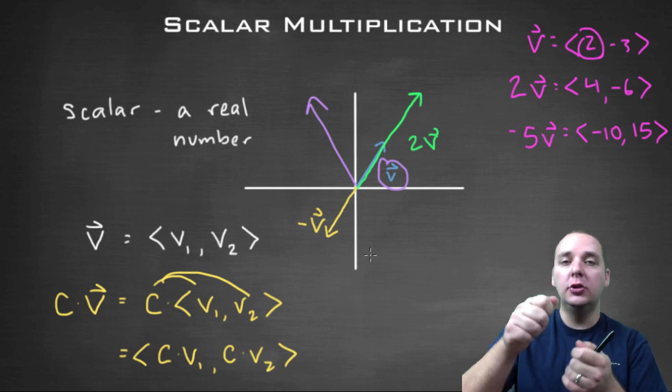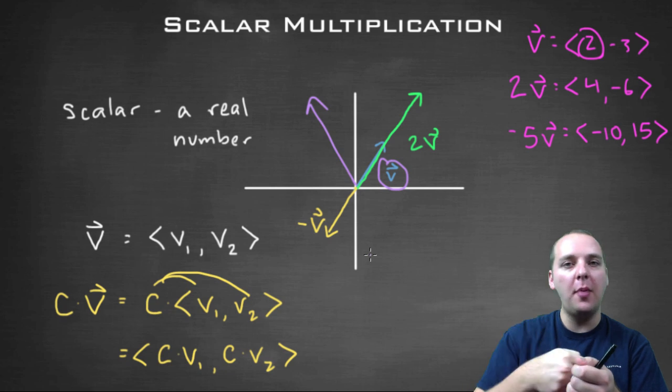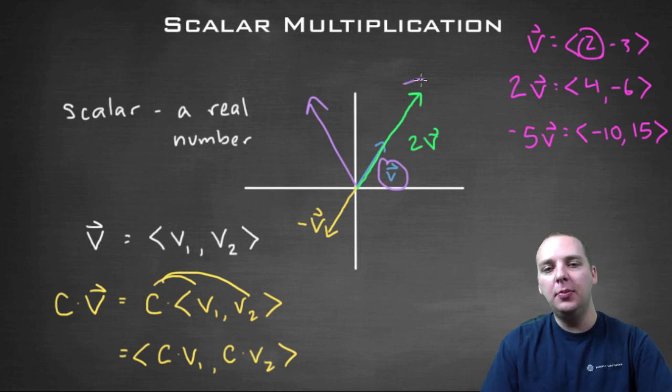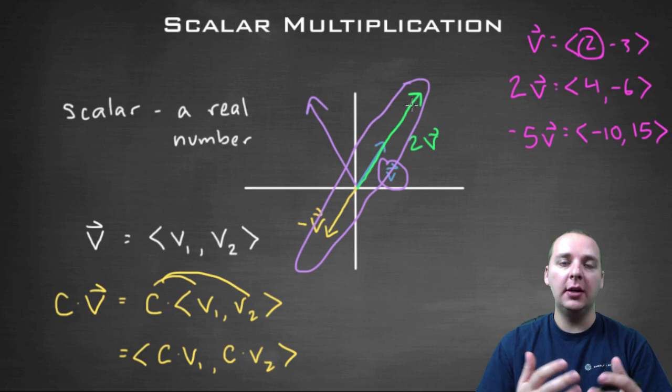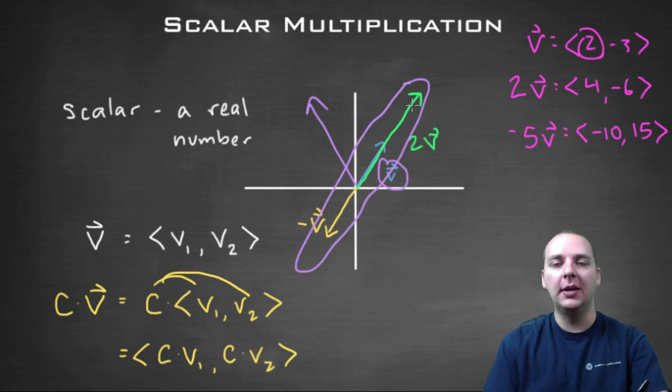It'll only make v shorter than it is, or longer than it is, possibly turn around backwards, but it would still be along this particular line right here. So that's what a scalar is, and this is how you do scalar multiplication.